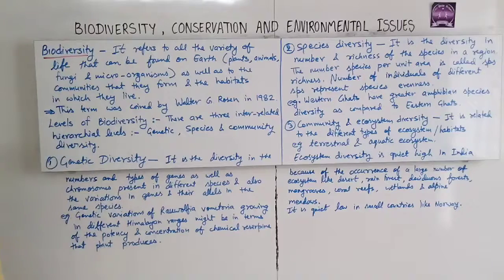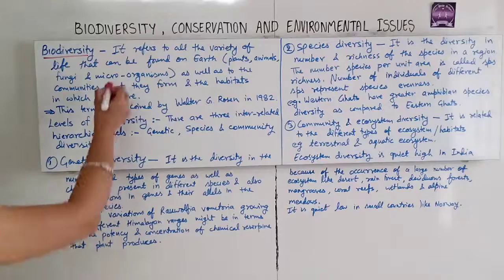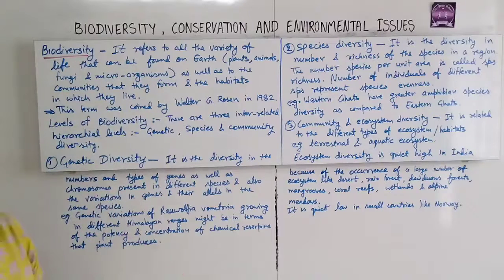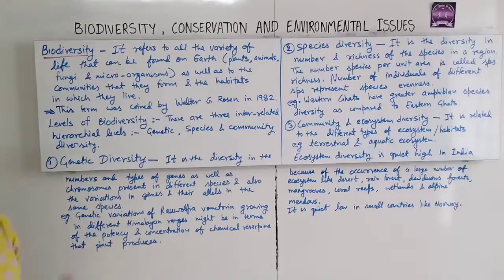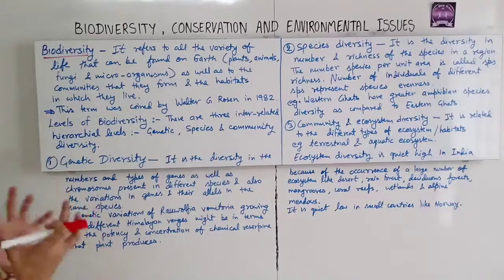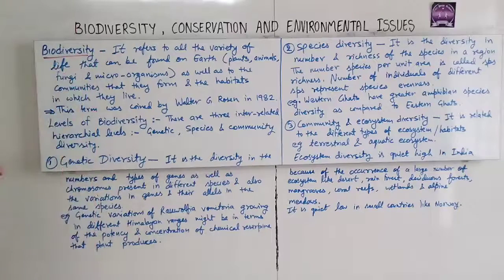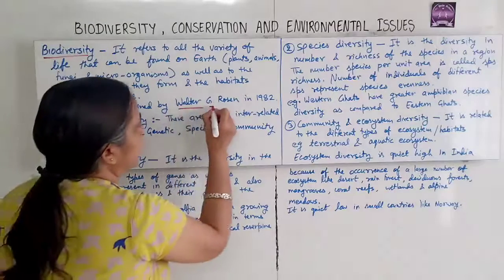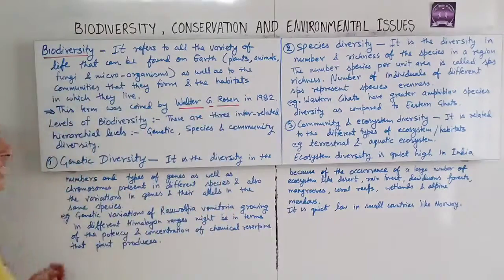Biodiversity refers to the variety of all varieties of life that can be found on earth — plants, animals, fungi and microorganisms — as well as to the communities they form and the habitats in which they live. Millions of species come under biodiversity. This term was coined by Walter G. Rawson in 1982.